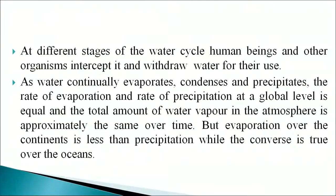At different stages of the water cycle, human beings and other organisms intercept and withdraw water for their use. As water continually evaporates, condenses, and precipitates, the rate of evaporation and precipitation at a global level is equal, and the total amount of water vapor in the atmosphere remains approximately the same over time. However, evaporation over the continents is less than precipitation, while the converse is true over the oceans.